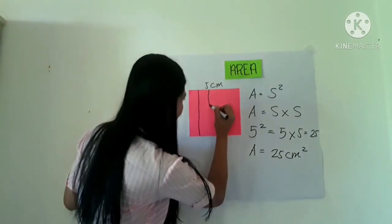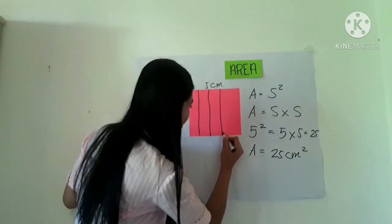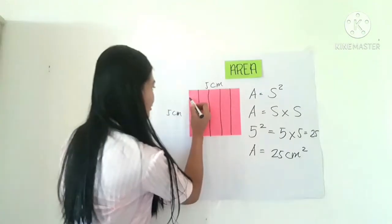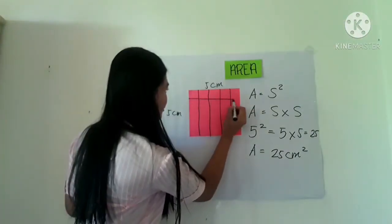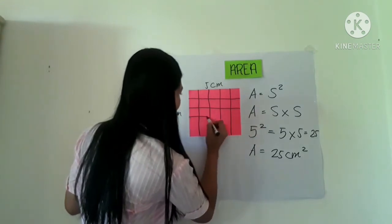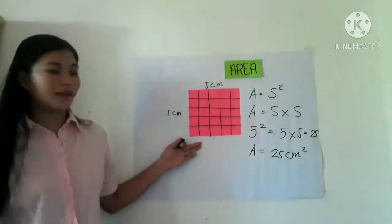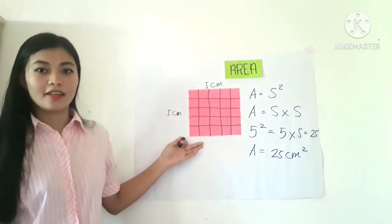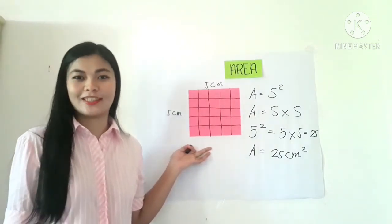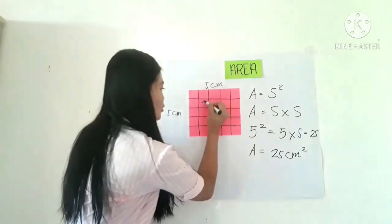1, 2, 3, and then another. 1, 2, 3, okay. It is not that perfect, but I hope you get my point. And this box contains 25.